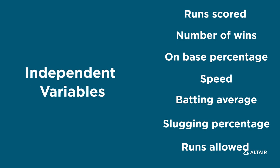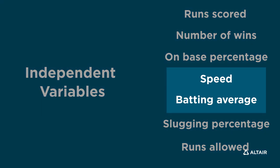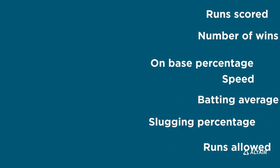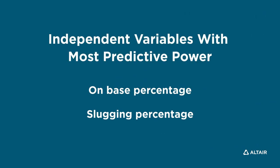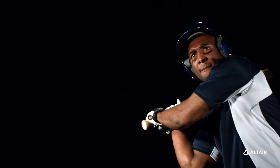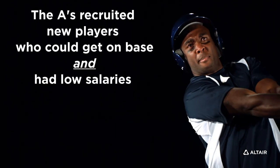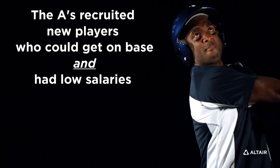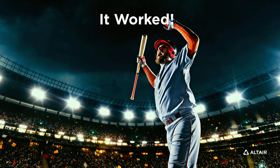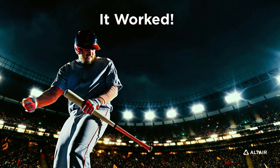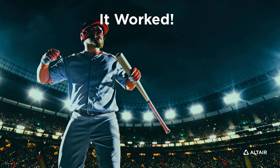Teams had traditionally focused on factors like batting average and speed to select players. But the A's used machine learning techniques to discover that on-base and slugging percentages were the variables with the highest predictive power. After losing their 2001 season, the A's began recruiting new players who could get on base and had low salaries. It worked — the A's went to the playoffs in 2002 and 2003 as a result of using these methods, and they've continued to do well.